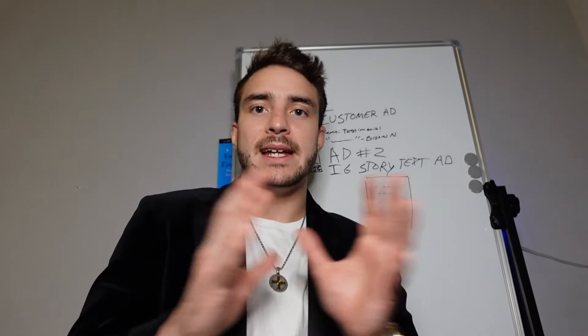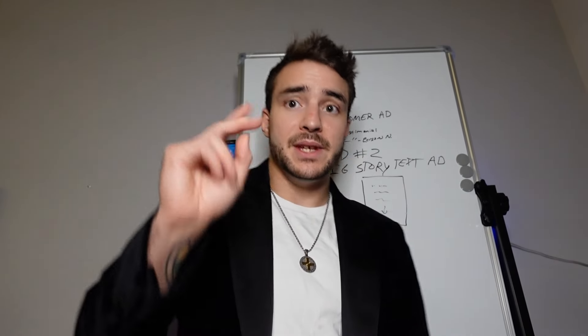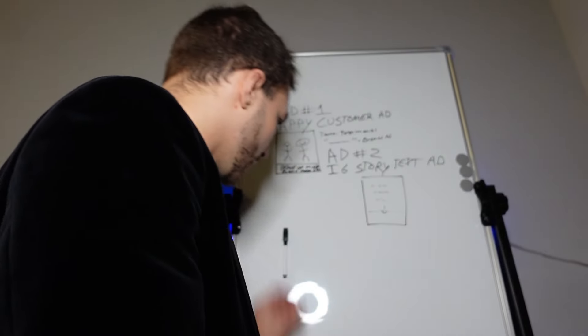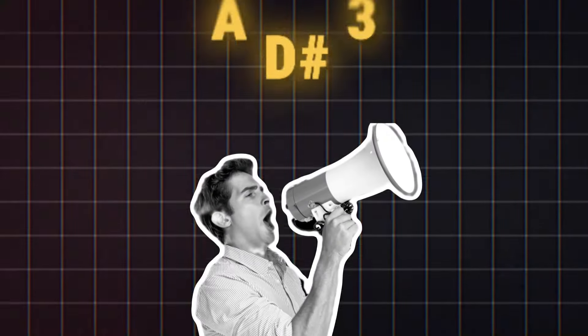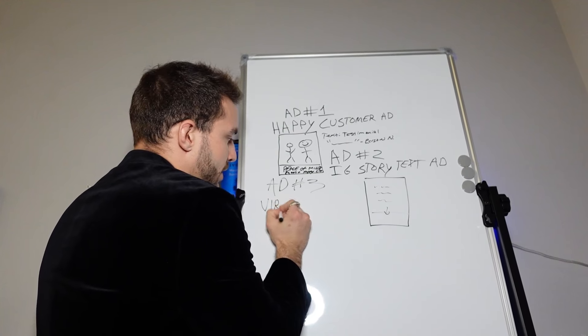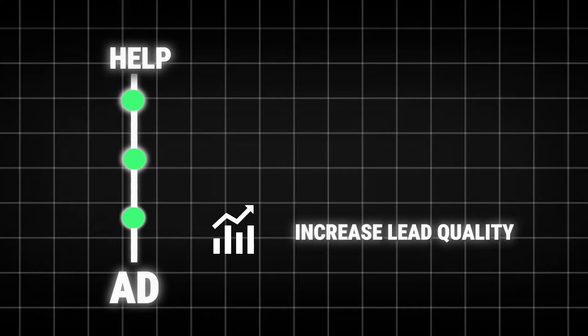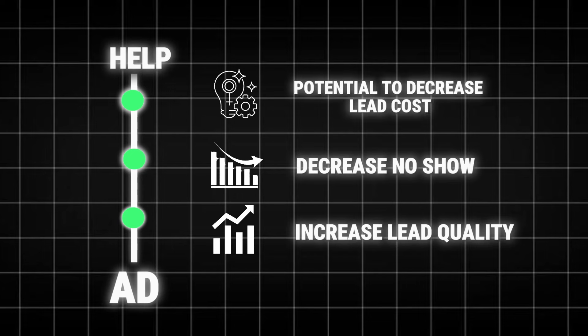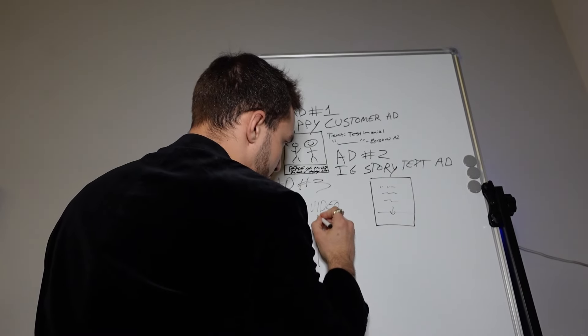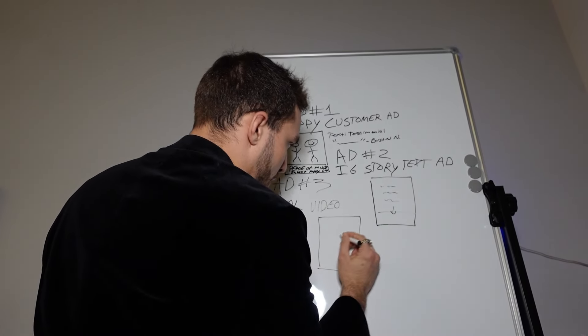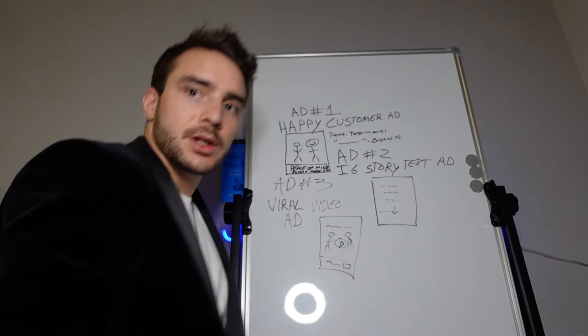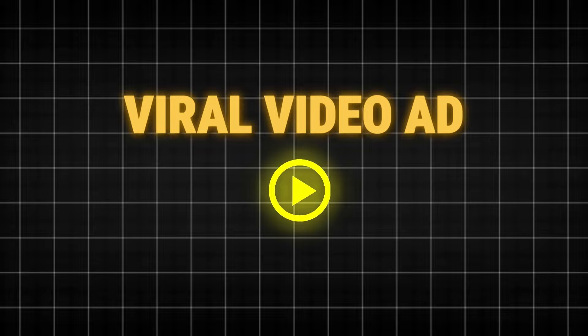Ad number two in summary: it's a text-based story ad — 'We are looking for 10 to 15 [location] residents who want to take advantage of [your offer]. Here are some benefits. Click the link below to begin.' That's the second type of ad to put in your arsenal. Now ad number three is one of the most important ads you'll ever run — it can increase your lead quality, decrease your no-shows, and potentially decrease your lead costs as well. This third one is the viral video ad.